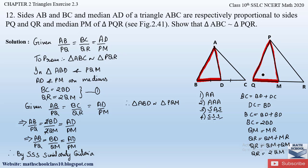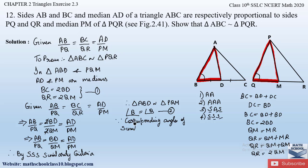Since triangle ABD is similar to triangle PQM, the corresponding angles of these two triangles are also equal. Therefore angle B = angle Q — let this be equation 2, since corresponding angles of similar triangles are equal.